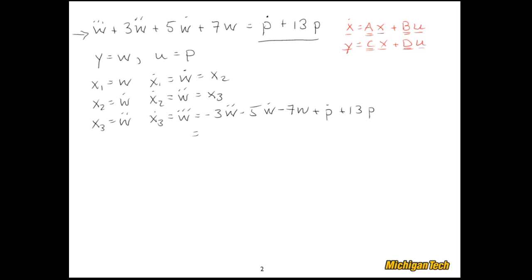Now let's replace the W's and the P's with X's and U's. We get negative 3 X3 minus 5 X2 minus 7 X1 plus, well, what to do with that? We can certainly write plus 13 U for the P, but we have no P dot in our U.